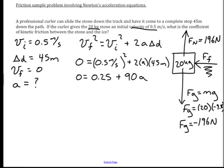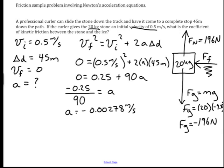I'm going to move the 0.25 to the other side of the equation, then divide by 90 to isolate and solve for a. The acceleration is equal to negative 0.00278 meters per second squared. That's a rounded number. The negative sign is good — it means the stone is slowing down. If velocity is in the positive direction, this negative acceleration causes slowing.